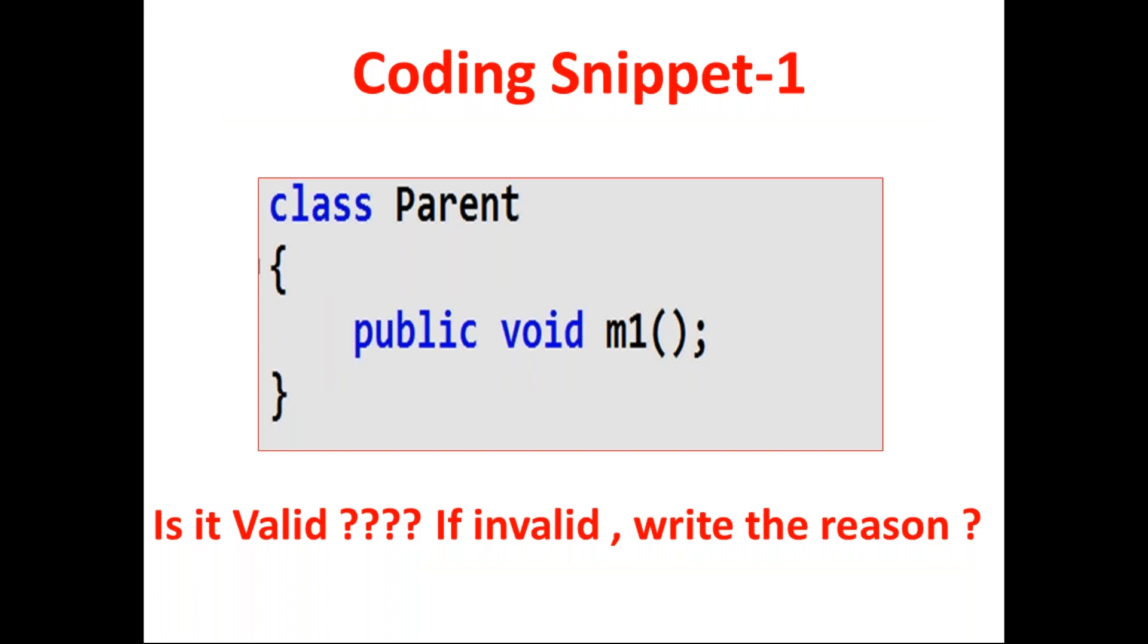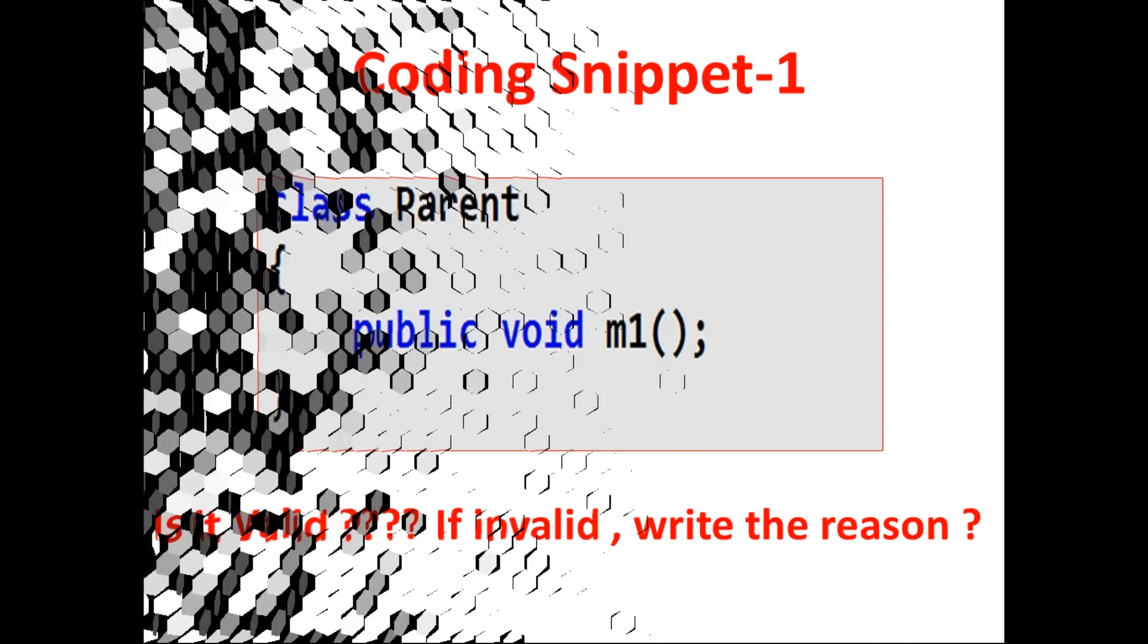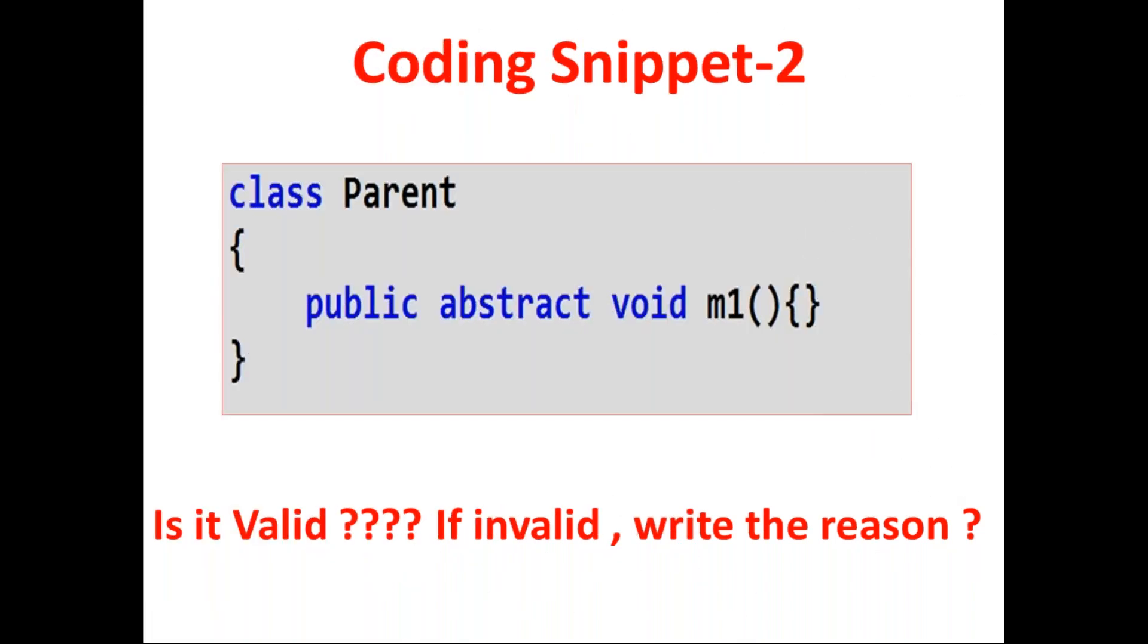Now the second coding snippet: observe class Parent, public abstract void m1, curly brace open and close. Can you please confirm is it valid or not? If it is invalid, why is it invalid? What's the reason for that? Which compile time error we are going to get if it is invalid?